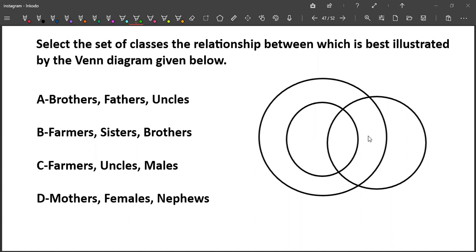We are given certain classes, three classes mainly. In option A, we see brothers, fathers and uncles.